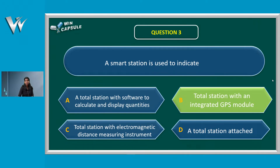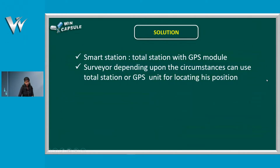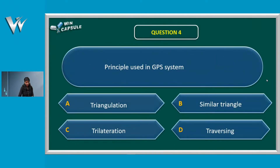That is why a smart station — when you have a survey you can get a correct position and locate it. The answer for question four: Aisha, Akshara, Lakshmi, Gidu, Dhanjusha — all of them selected option C, which is Tri-Lateration.